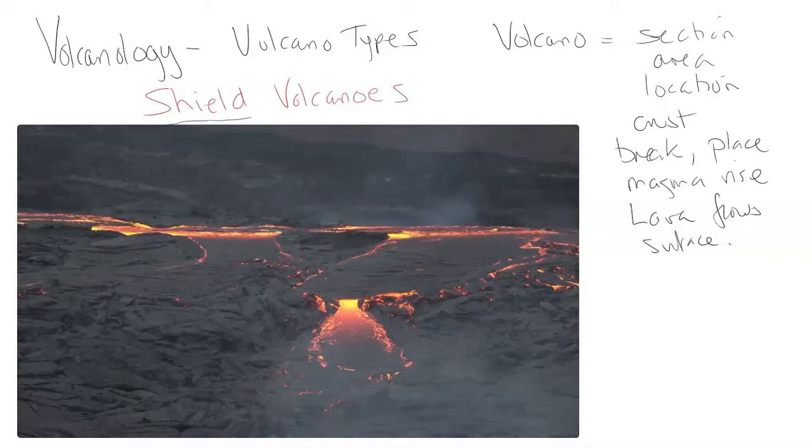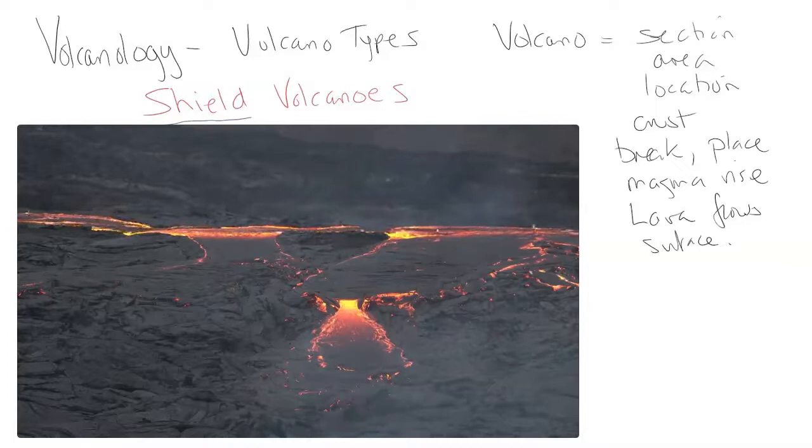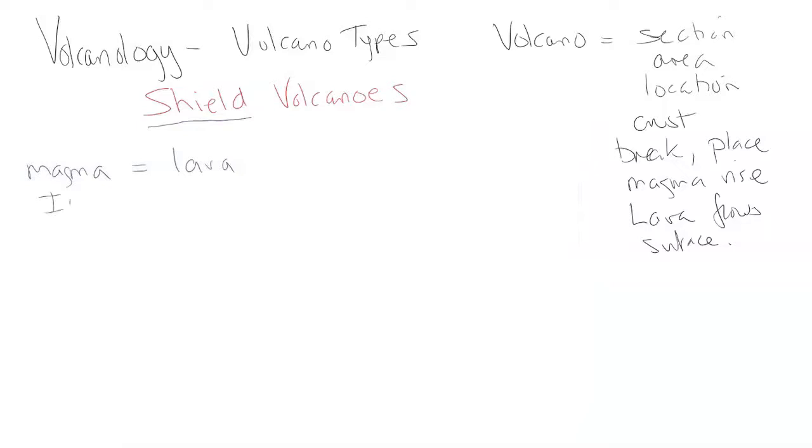Looking at shield, the shield is one type and it's based on the magma. We can also look at the lava as well. Magma is intrusive INT and lava is the extrusive form EXT.